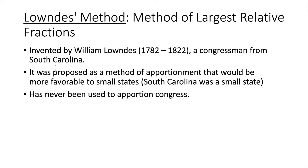Some history about it: it was invented by William Lowndes, who lived from 1782 to 1822, a congressman from South Carolina. It was proposed as a method of apportionment that would be more favorable to small states — at the time, South Carolina was a small state. It has never been used to apportion congress.